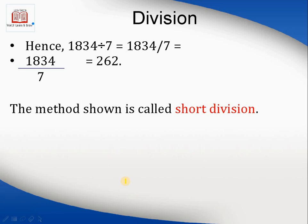When we have a better grip on tables and the division process, we can write this in a single line: 1834 divided by 7. Seven ones are seven, seven twos are fourteen — with carry — and so on. This method is called short division.